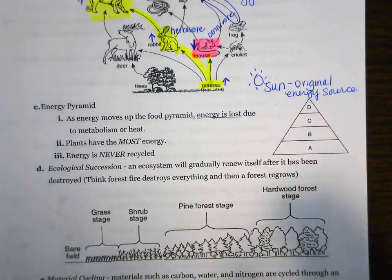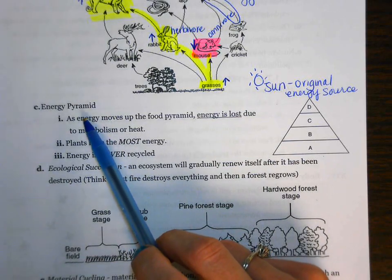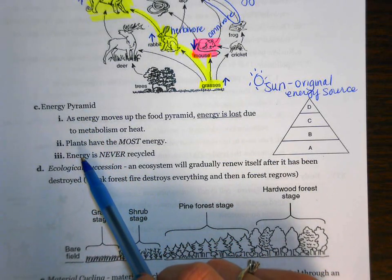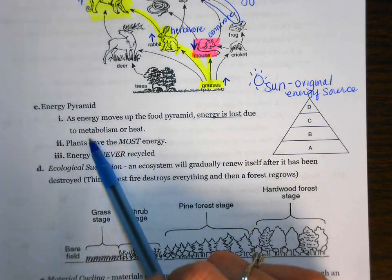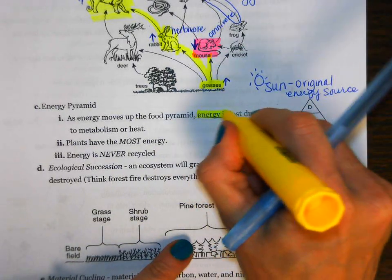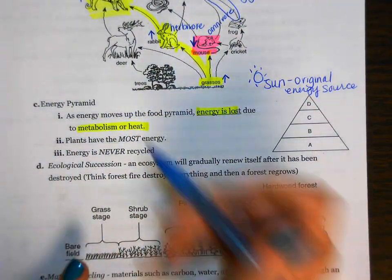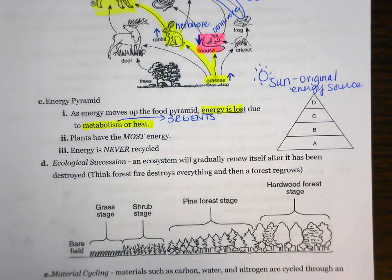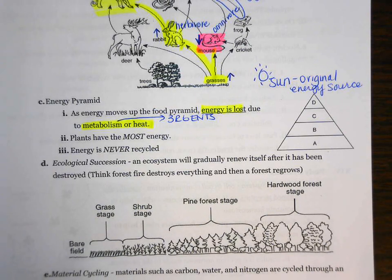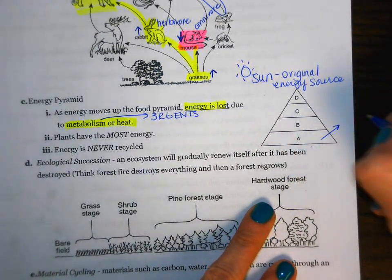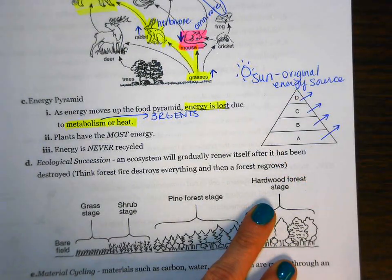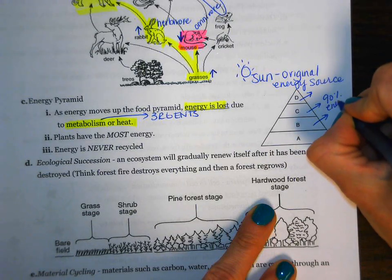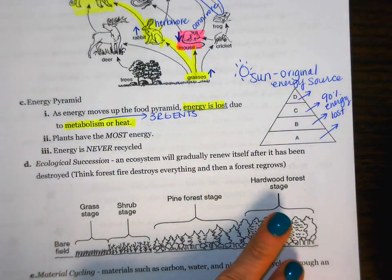Next we have the energy pyramid, which shows how the amount of energy changes as you move up a food web or food chain. As energy moves up, energy is lost due to metabolism and heat — that's a really important concept. Metabolism refers to life processes like respiration, regulation, growth, excretion, and nutrition. Your body is always giving off heat, and the same applies to other living organisms. At every single level, 90% of that energy gets lost, again due to heat and metabolism.